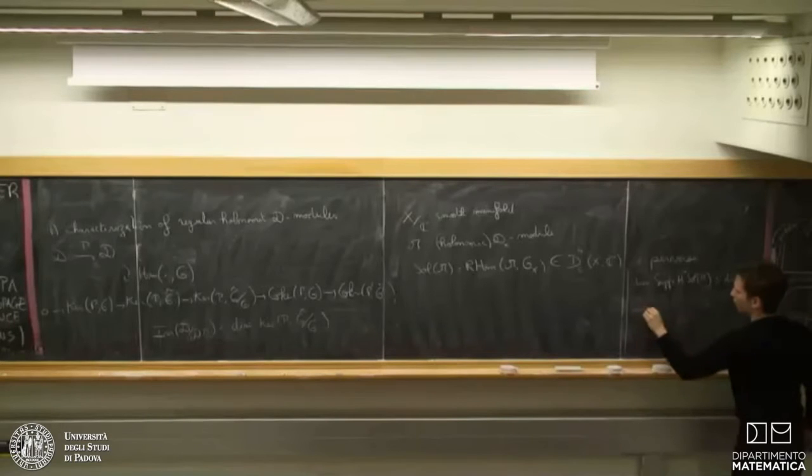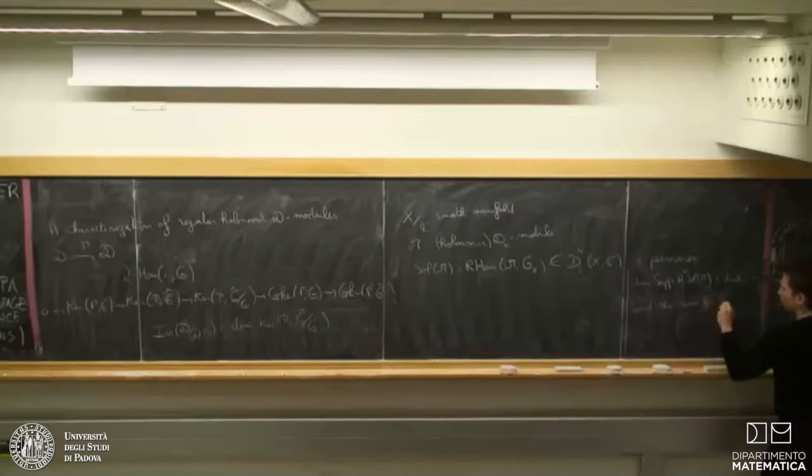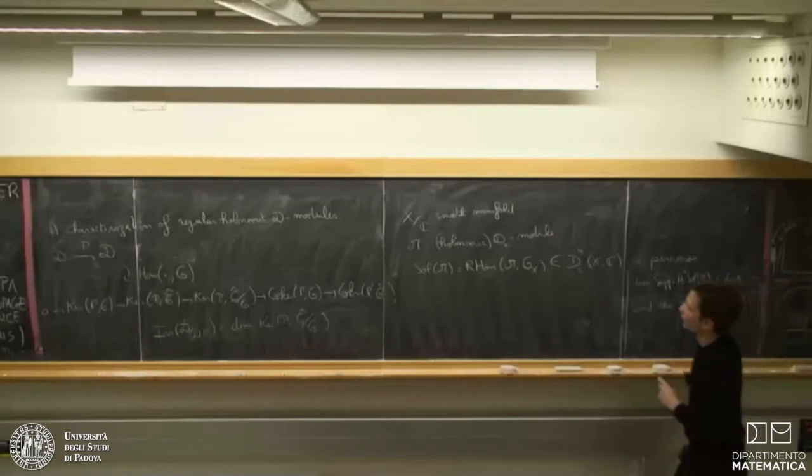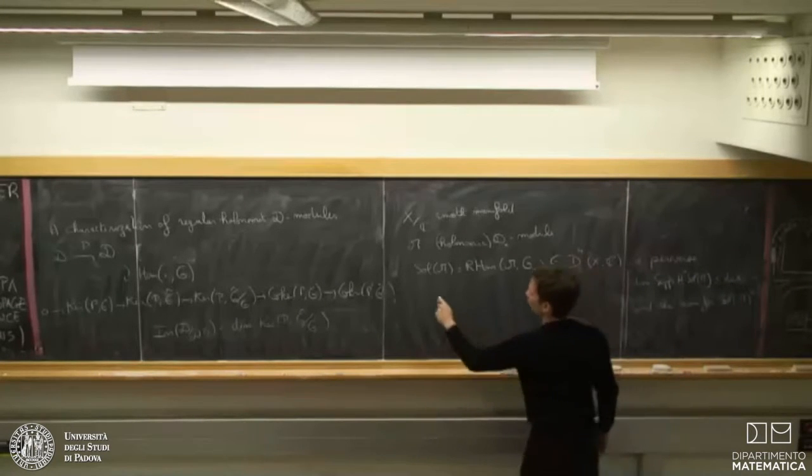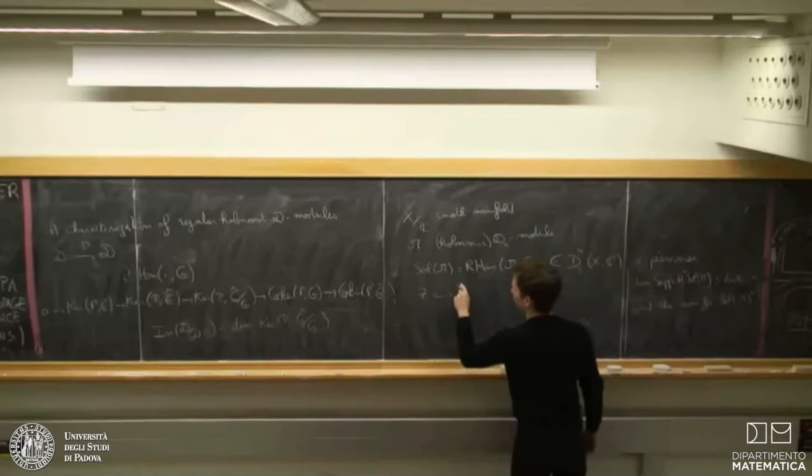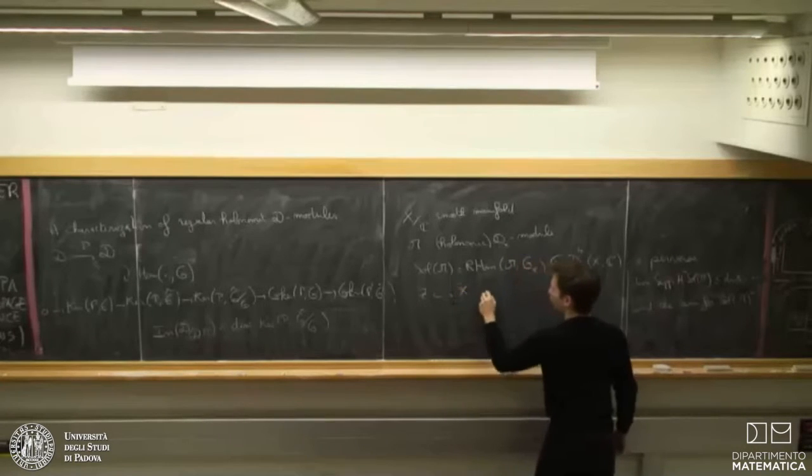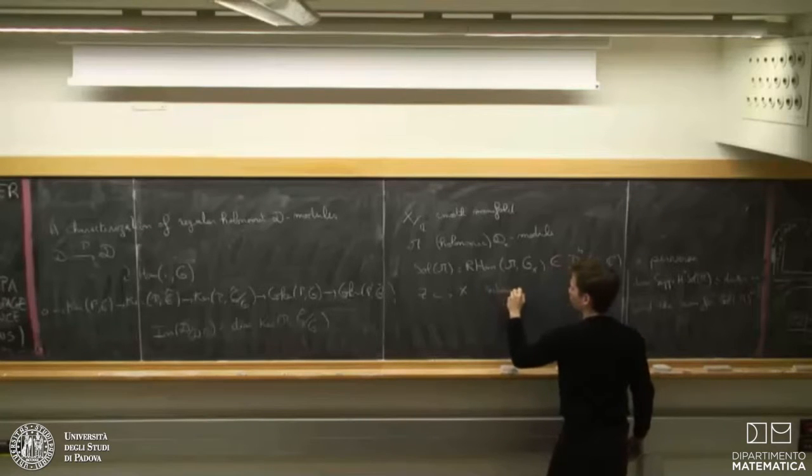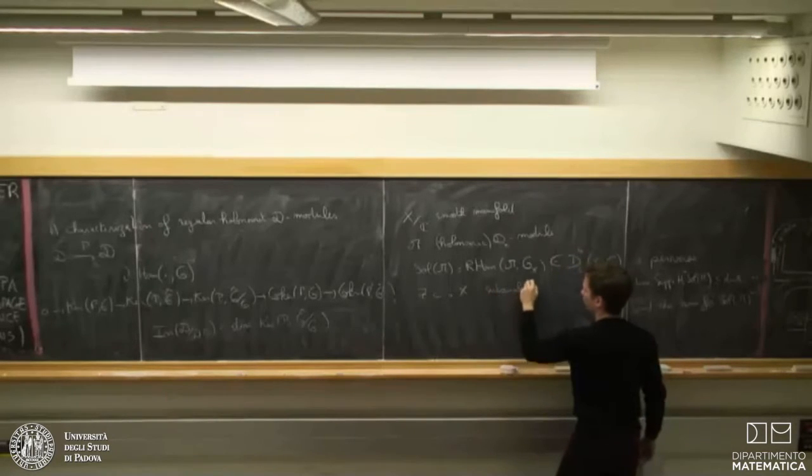And this is not only sitting in that category. This is a perverse sheaf. That is to say, in one word, the dimension of the support of the nth cohomology sheaf of M is less than the dimension of X minus n. And the same for the dual complex. So, let's take Z as a subanalytic space in X.